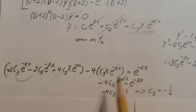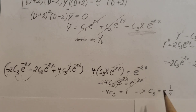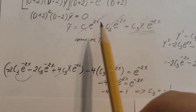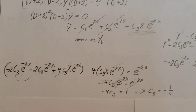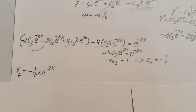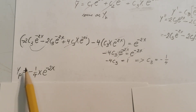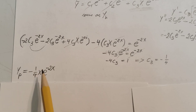We have e to the negative 2x on both sides, so we can cancel it. That gives us negative 4 c3 equals 1, and so c3 equals negative 1 fourth. Now we can come back to our temporary y and finally call it yp, with c3 replaced: yp equals negative 1 fourth times x times e to the negative 2x.